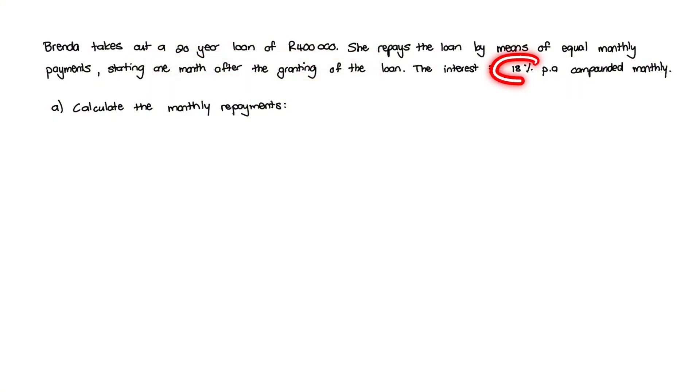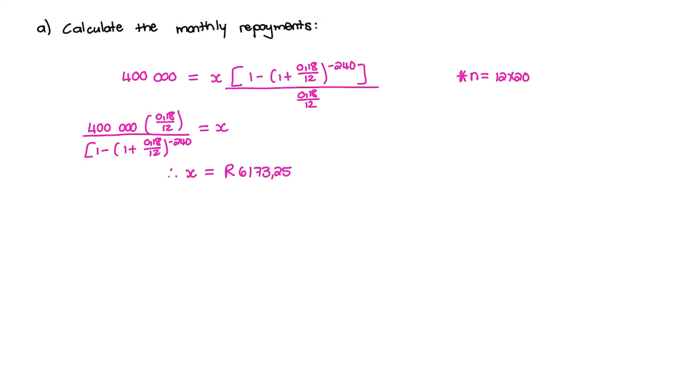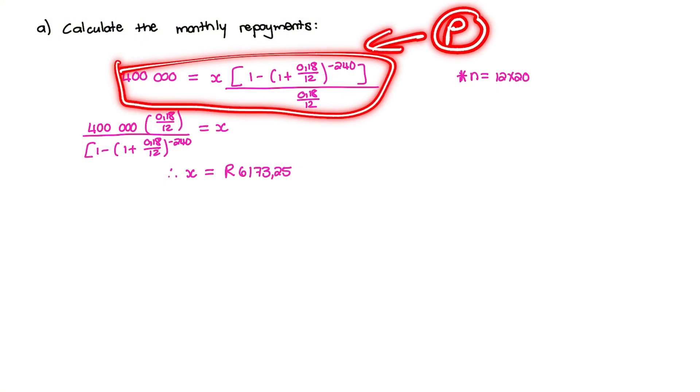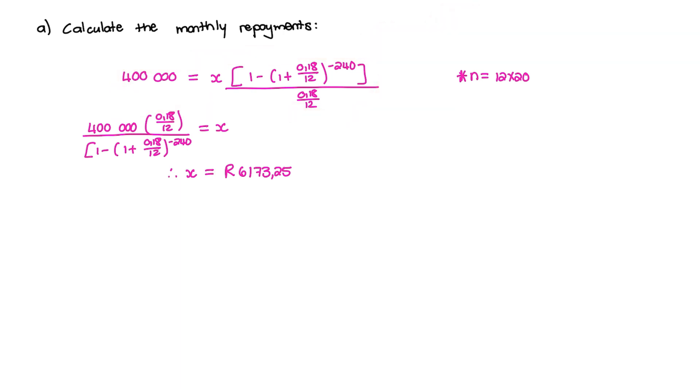And then they give us the interest rate. The first question says, calculate the monthly payments. So that is X. And as I stated before, in order to find X, we use the present value annuity that we have on our formula sheet.